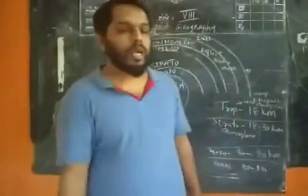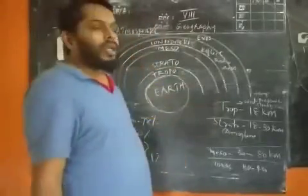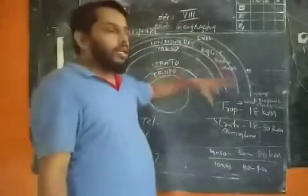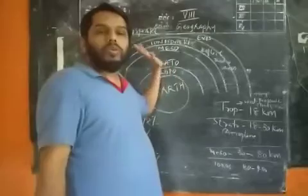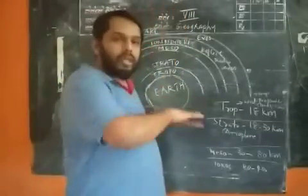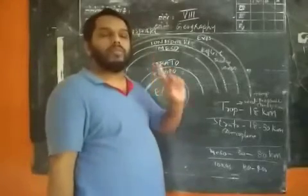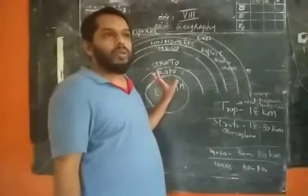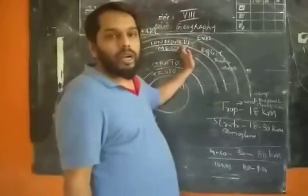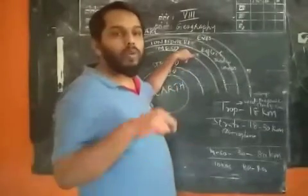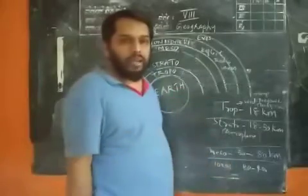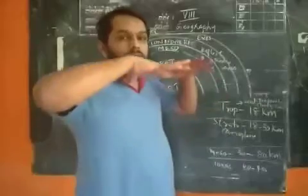The atmosphere is a layer or blanket of air containing nitrogen, oxygen, carbon dioxide, and many other gases. When we go 160 meters up from the surface of the earth, one degree Celsius of temperature decreases. In another way: for every one kilometer of height, approximately 4.6 degrees Celsius of temperature decreases. Near the surface of the earth, pressure is very high because heavy gases are present there.